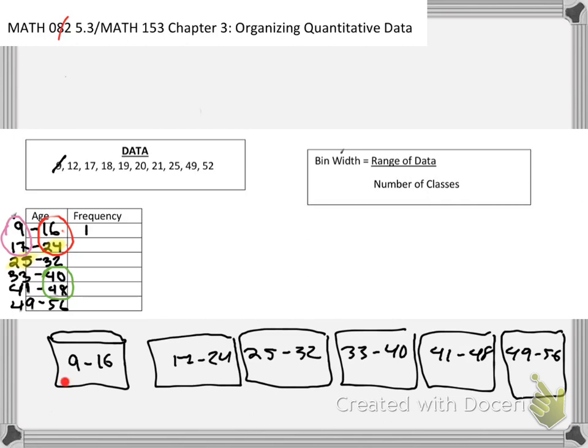Then we have 12. 12 is also between 9 and 16, so it's going to come right here. So that's our second marble in our jar. Then we have 17. Notice that 17 is now going to land into our next class or bin. So that's going to be this jar right here. Then we have 18 also here, 19 also here, 20 also here, 21 also here. So it looks like we have 5 data points in the second class. So I'll update this to reflect that we have 5 marbles landing in our second bin or class or jar.